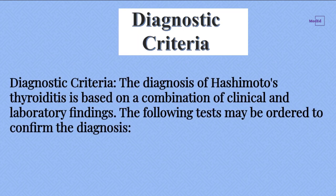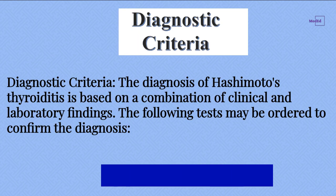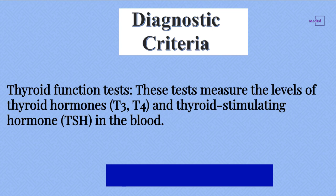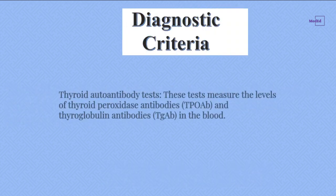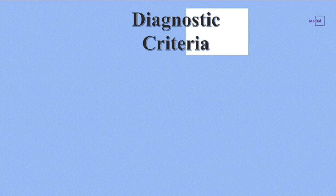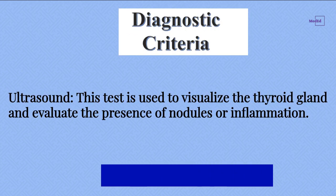The diagnosis of Hashimoto's Thyroiditis is based on a combination of clinical and laboratory findings. The following tests may be ordered: thyroid function tests, which measure the levels of thyroid hormones T3, T4, and thyroid stimulating hormone TSH in the blood; thyroid autoantibody tests, which measure thyroid peroxidase antibodies and thyroglobulin antibodies; and ultrasound to visualize the thyroid gland and evaluate for nodules or inflammation.